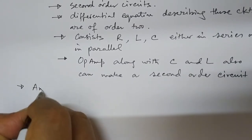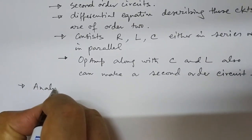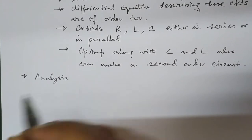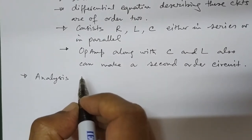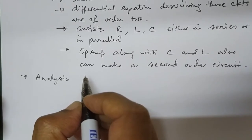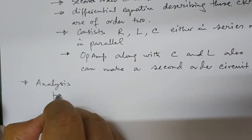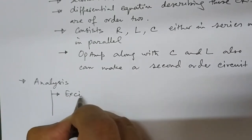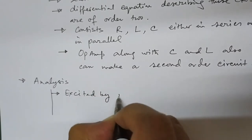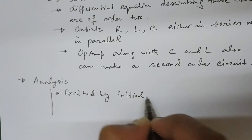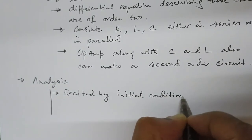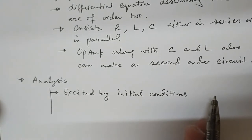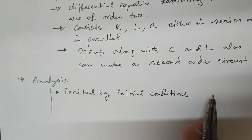So how do we analyze a second-order circuit? Our analysis of second-order circuits will be similar to the approach used for first-order circuits. First, we will consider circuits excited by initial conditions — that means some kind of voltage or current source was applied from time t equal to minus infinity up till t equal to zero, and then it was removed.